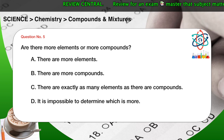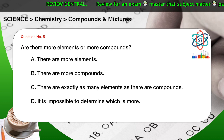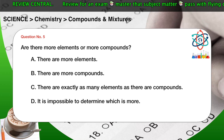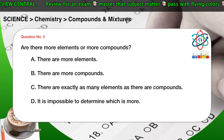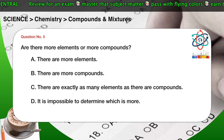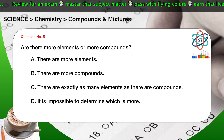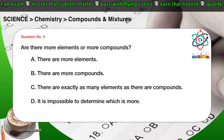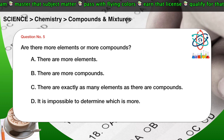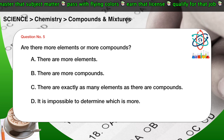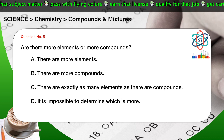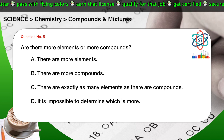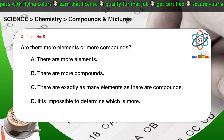Question number 5. Are there more elements or more compounds? A. There are more elements. B. There are more compounds. C. There are exactly as many elements as there are compounds. D. It is impossible to determine which is more.